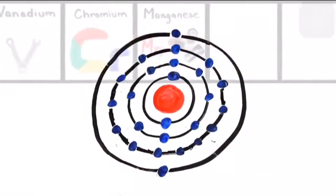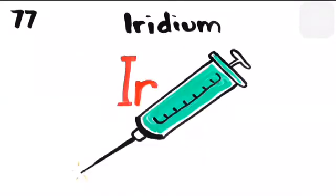Iron is the 26th. Then cobalt, nickel coins you get. Copper, zinc and gallium, germanium and arsenic.